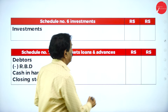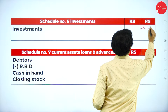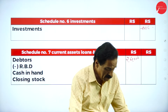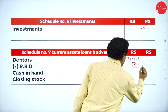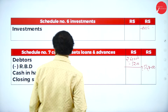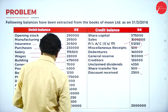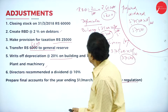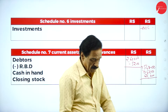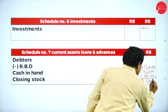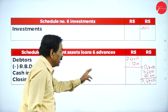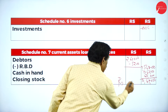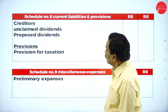Schedule 7 — Current assets: debtors ₹2,60,000 minus RBD ₹5,200 = ₹2,54,800. Cash in hand ₹34,250. Closing stock ₹60,000. Total current assets = ₹3,49,050.